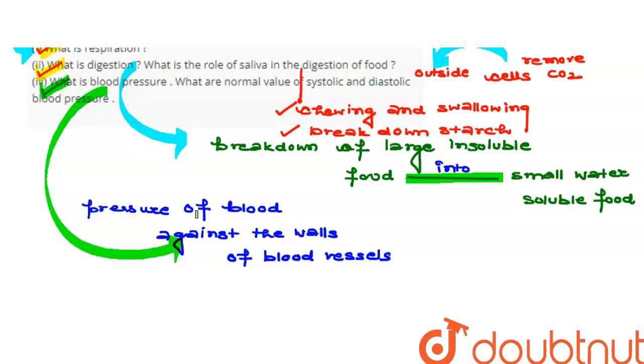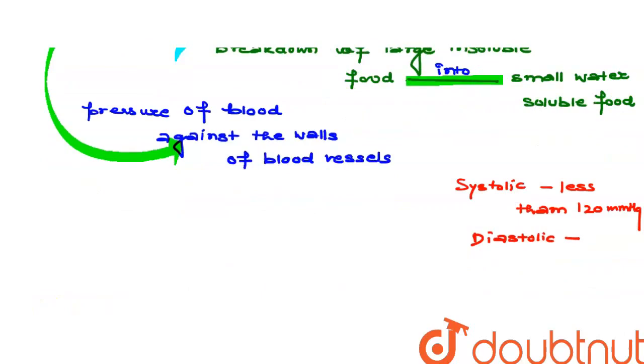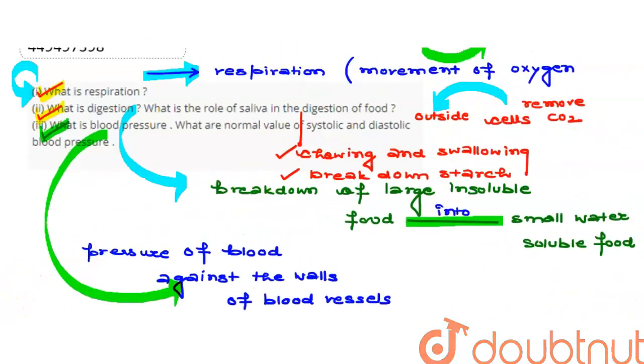Normal value. If we talk about systolic pressure, then normal value is less than 120. Systolic is less than 120 mm mercury. If we talk about diastolic, then diastolic should be less than 80 mmHg.